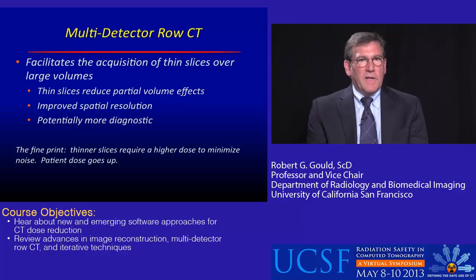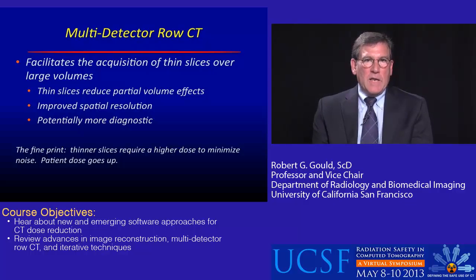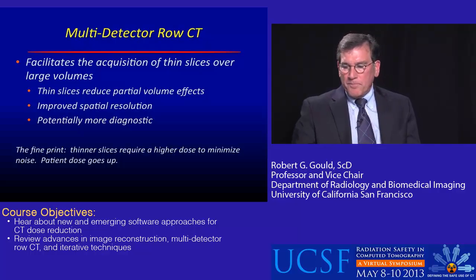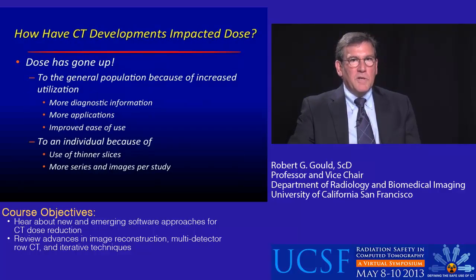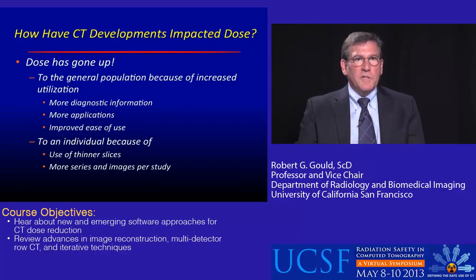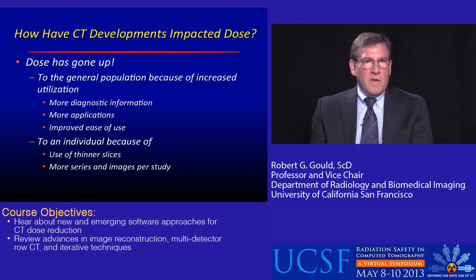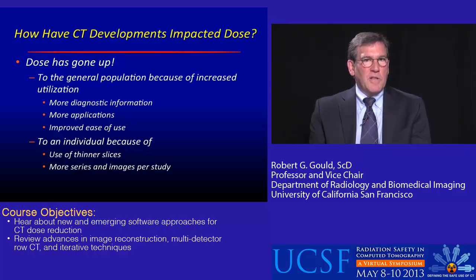But the fine print is that to get these thinner slices of equal quality, it requires a higher dose. So the patient dose will go up if all that is done is thinner slices acquired by multi-detector row CT. CT doses have gone up because of increased utilization and greater use of thinner slices.